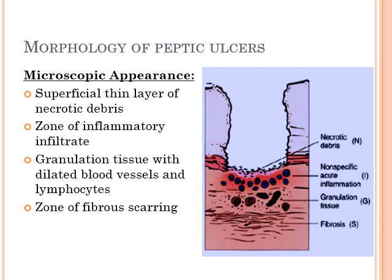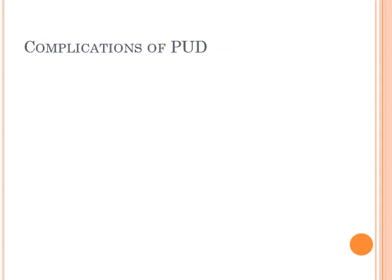Microscopically, peptic ulcers have four zones: the topmost zone of necrotic debris, followed by a zone of non-specific inflammation, then a granulation tissue zone, and the lowermost zone of fibrous scarring — sinus tissue. This picture is from Robbins.